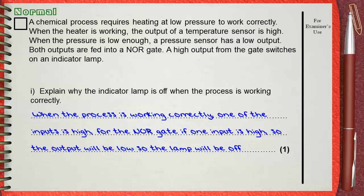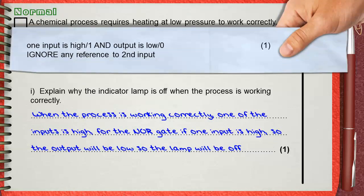And the indicator lamp will be off. The mark scheme gives one mark for saying that one input is high, so the output is low. This is for one mark.